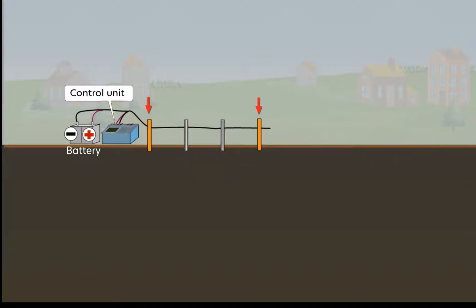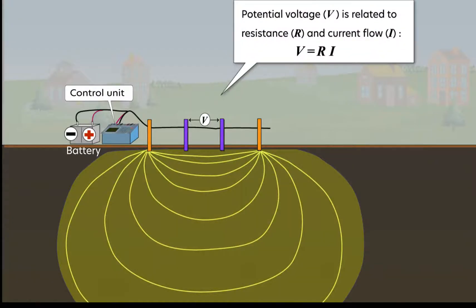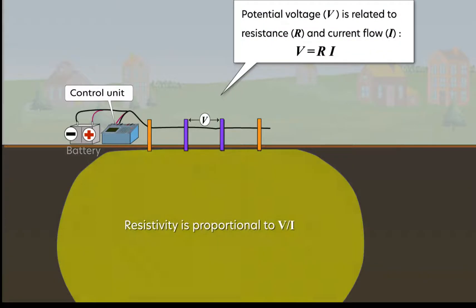Two electrodes are used to drive current. The other two are used for taking a reading of the electrical potential, that is, the difference in their voltage. This gives a rough average of the resistivity in the area of current flow.